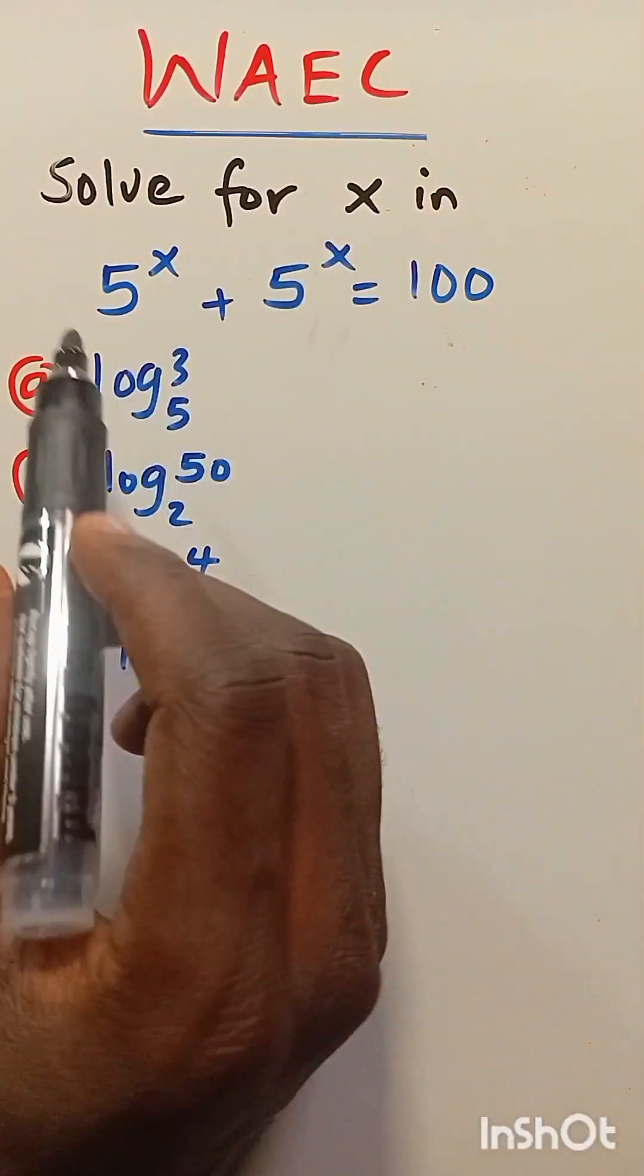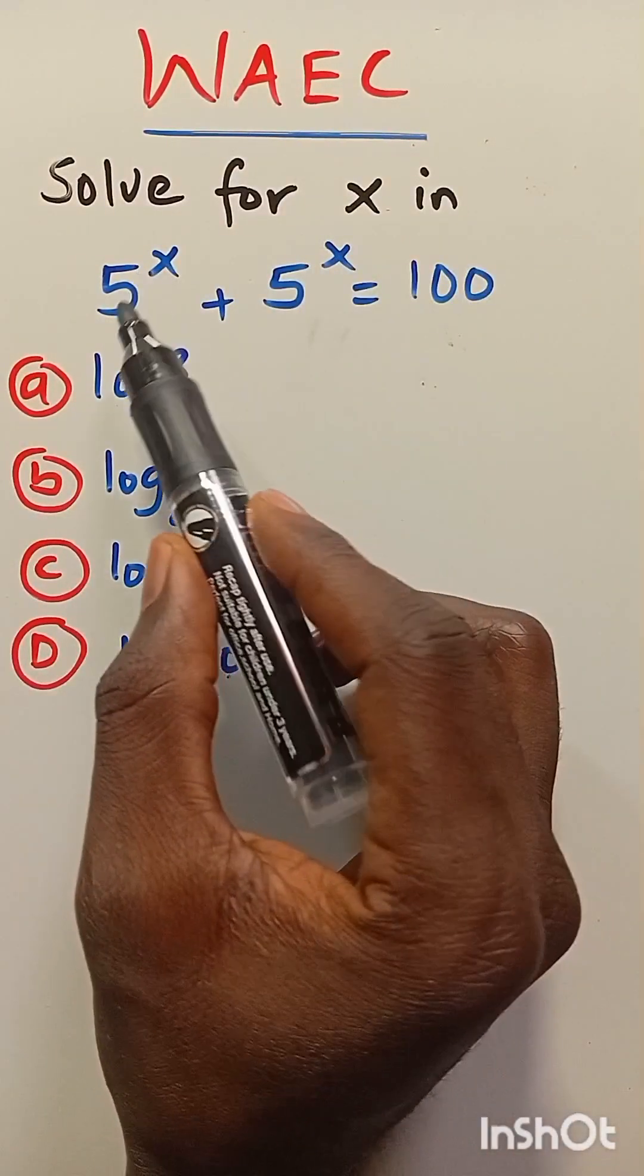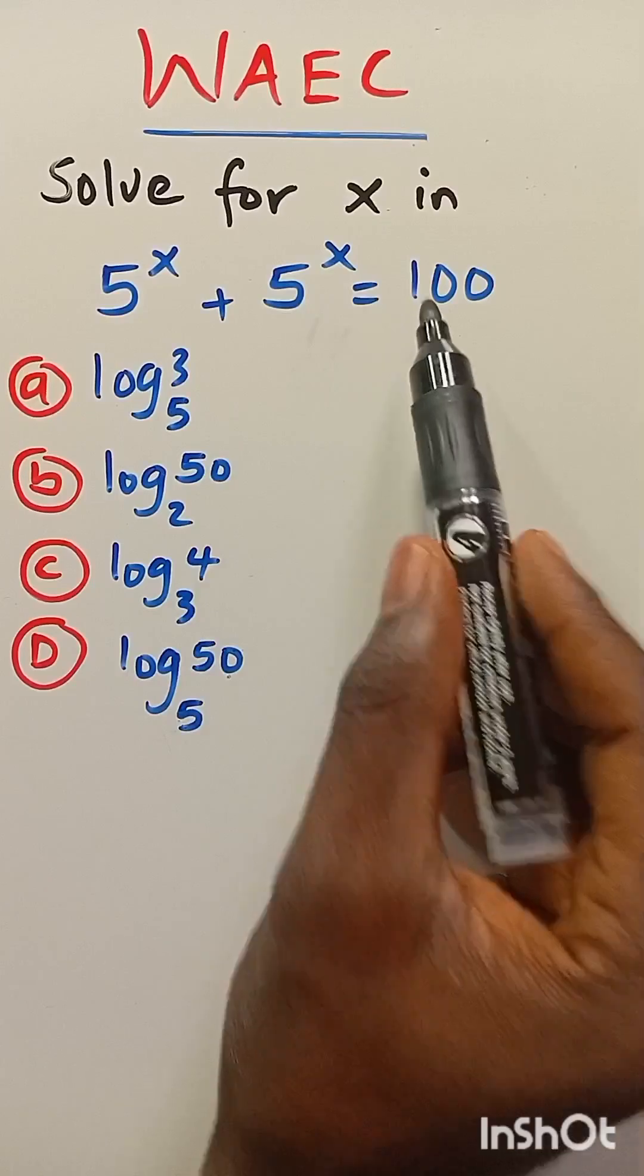Hi, let's take a look at this equation. The question says solve for x in 5 to the power of x plus 5 to the power of x equals 100.